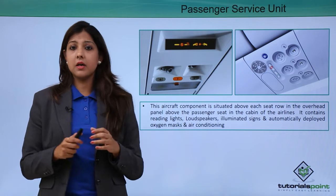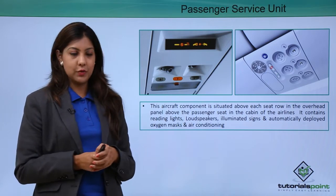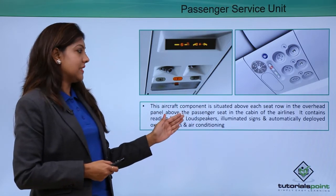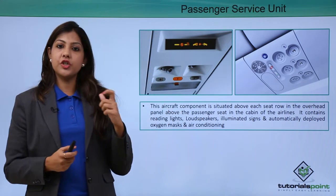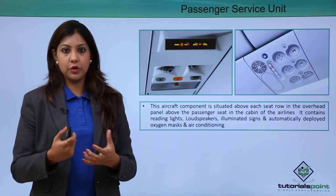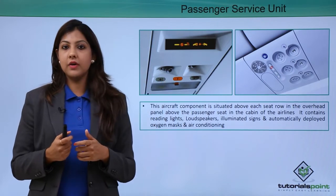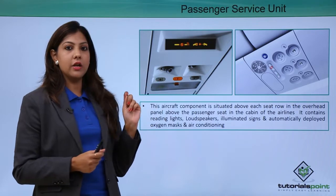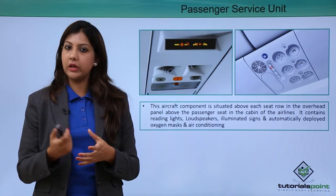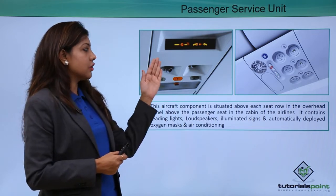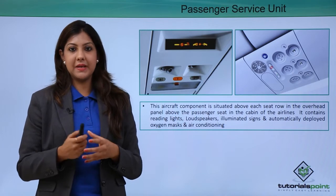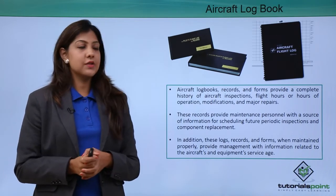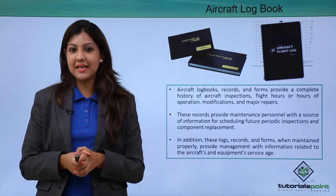Above each passenger seat is the Passenger Service Unit or PSU, an aircraft component situated in the overhead panel above each seat row. It contains an air vent to control airflow, a call bell to summon the flight attendant, a reading light that can be turned on or off, and the oxygen unit. This is an important component for passenger comfort and safety.